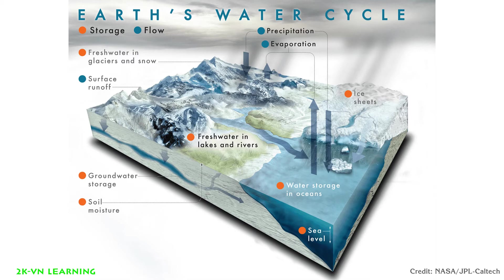Warm water vapor rises up through Earth's atmosphere. As the water vapor rises higher and higher, the cool air of the atmosphere causes the water vapor to turn back into liquid water, creating clouds. This process is called condensation. You can remember this by the word condense — think of it getting denser and denser.